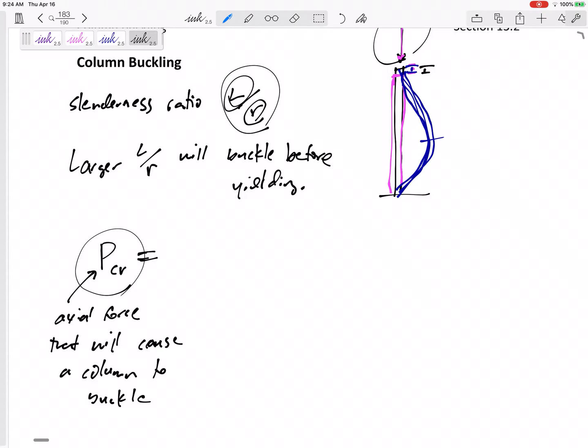So anyway, the critical force, P critical, is pi squared EI over KL squared. The force that a column will buckle is pi squared EI over KL squared.